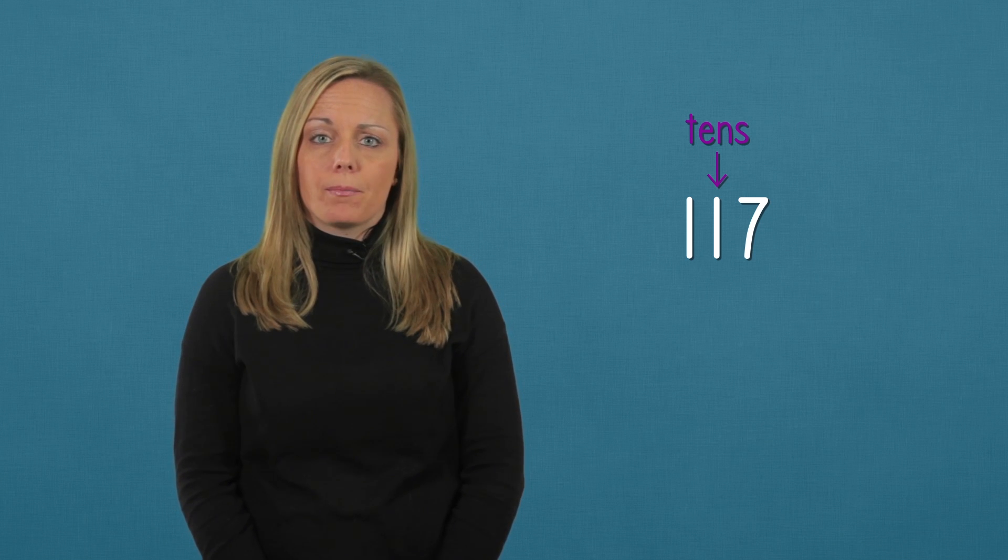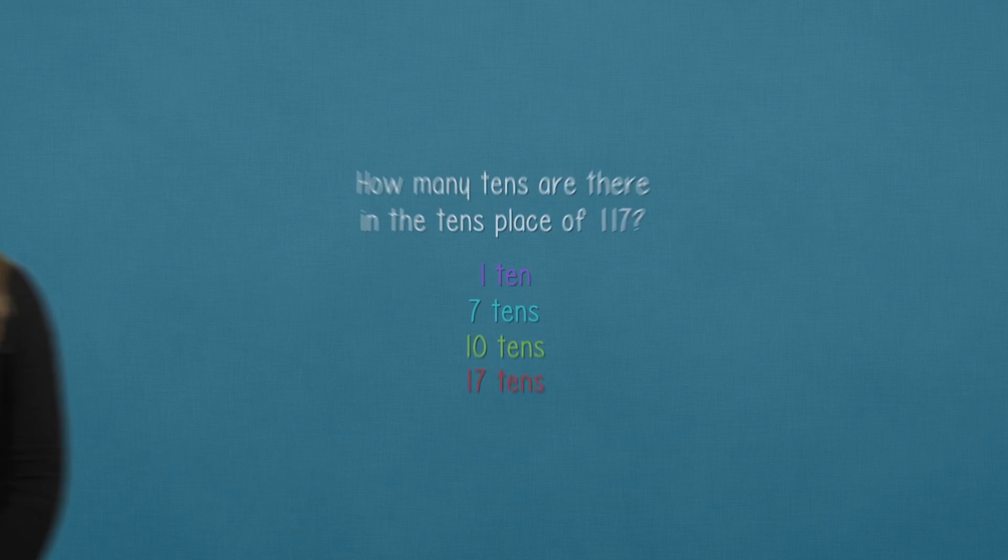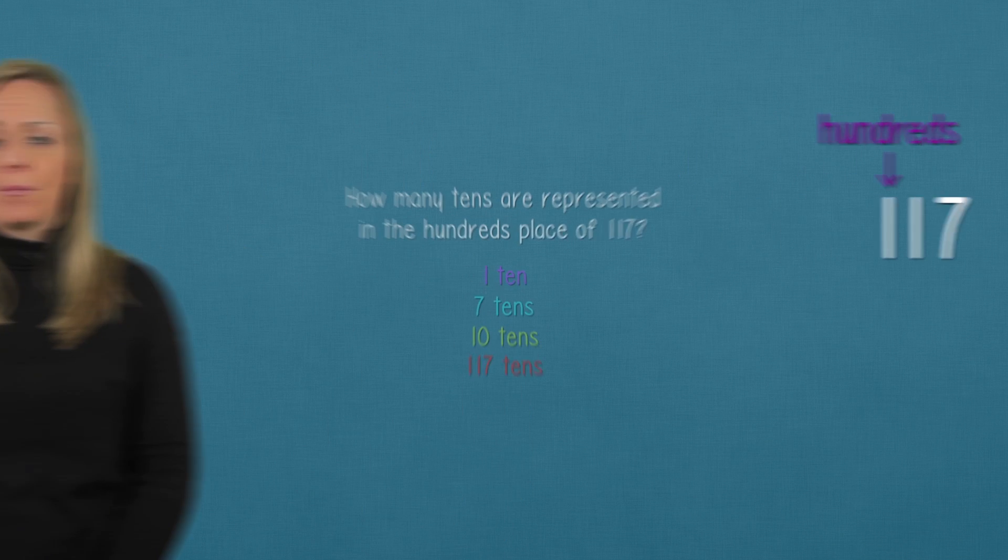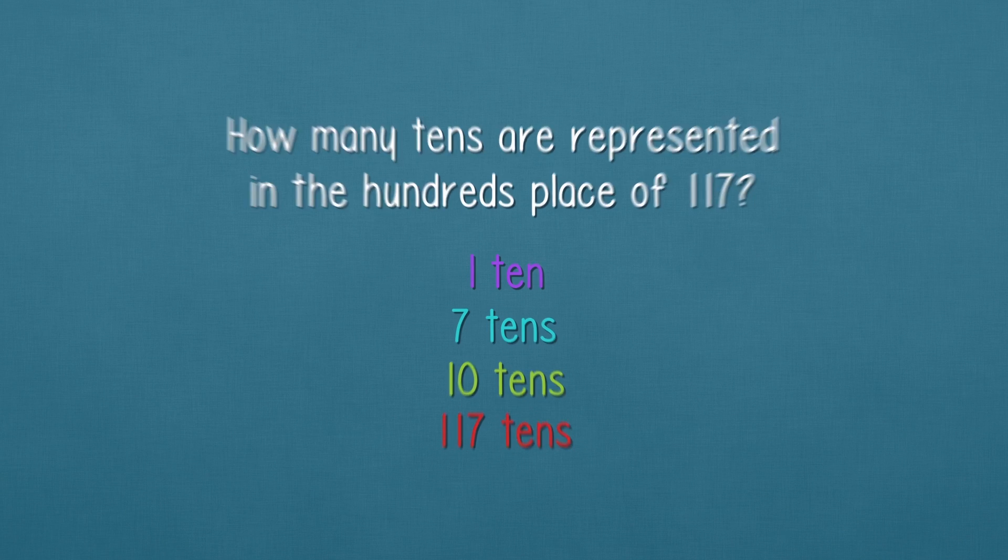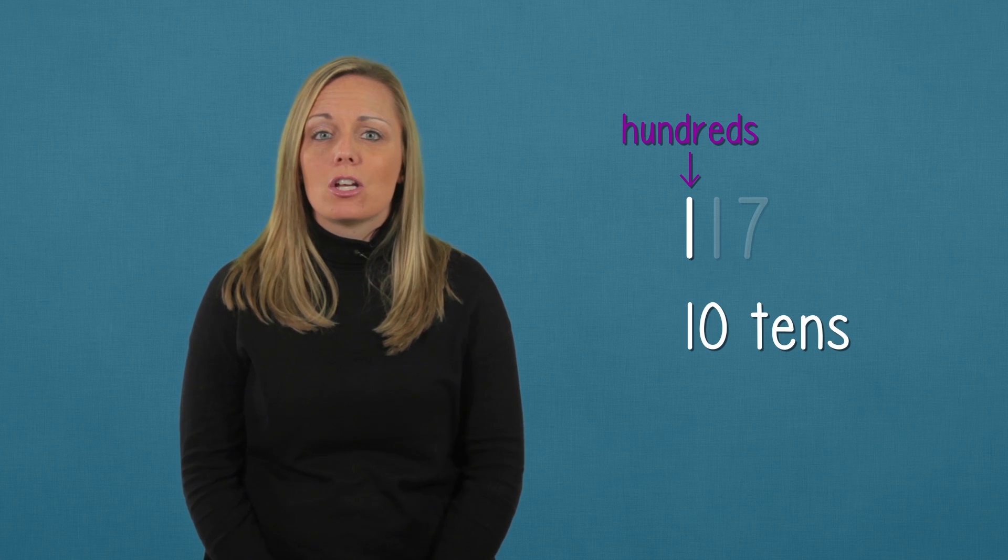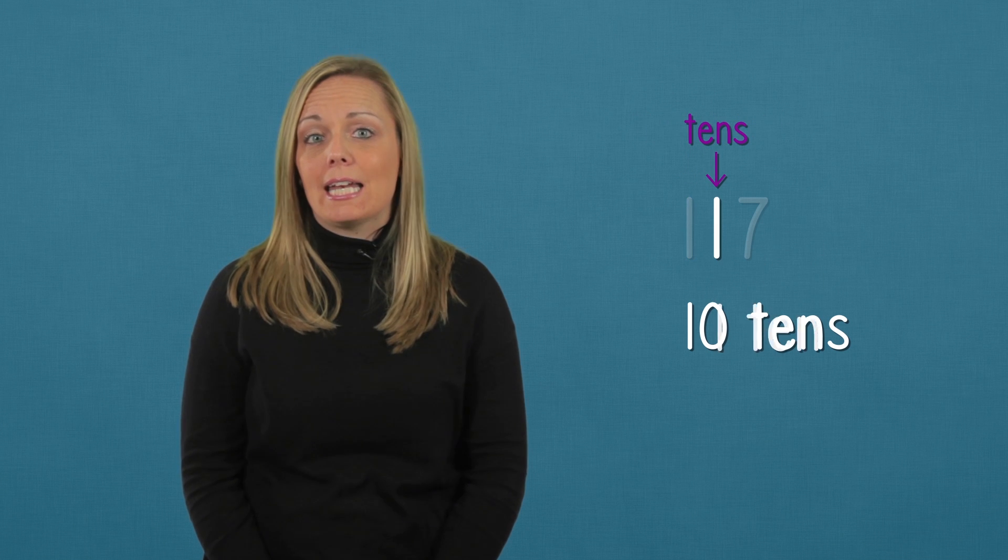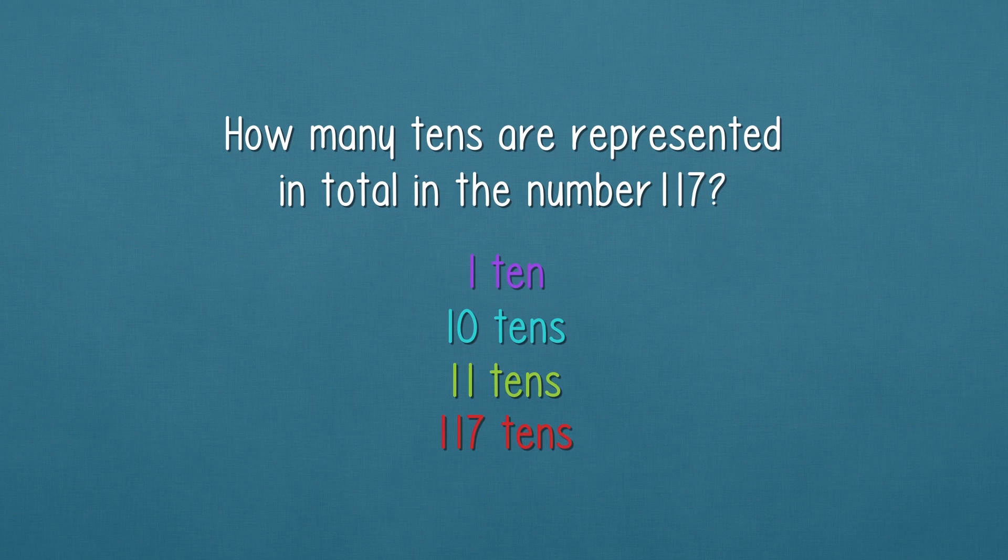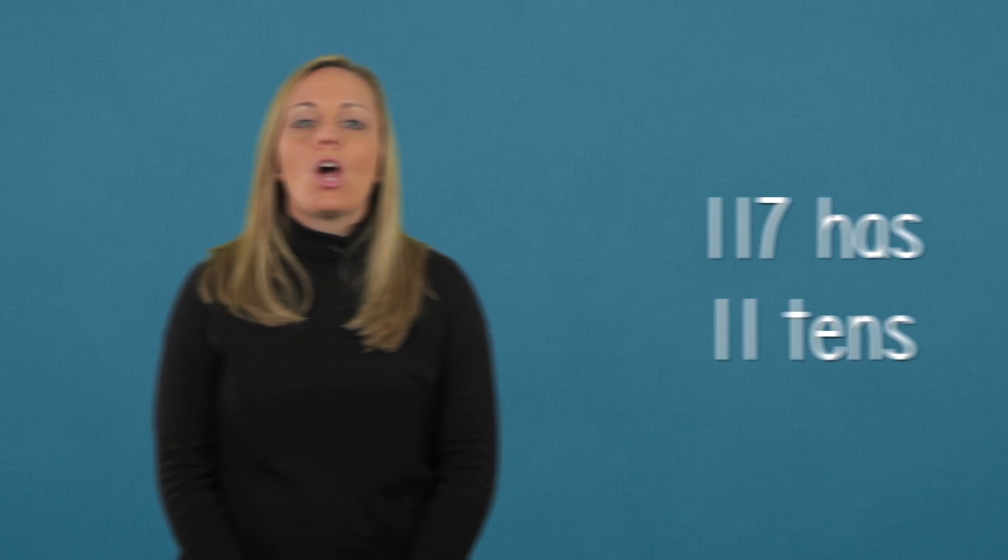Just like before, to round to the nearest 10, we need to find out how many tens are in our number. So how many tens are there in the tens place? We have one ten here in the tens place. But wait, we're not done yet. We have to look to the hundreds place as well. So how many tens are there in the hundreds place? Remember to consider how many tens there are in a hundred. There is a one in the hundreds place, which means one hundred, but that also means ten tens. So we have ten tens in the hundreds place and one ten in the tens place. How many tens are there in total? We have eleven tens in total.